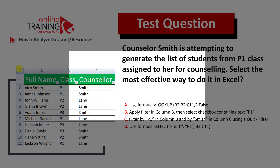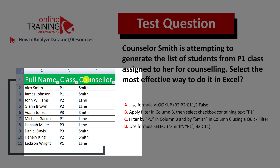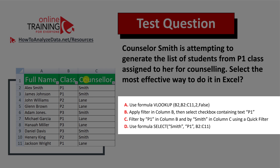You're presented with the snippet of data on the left. The data contains full names of the students, class ID in column B, and then the counselor's last name in column C. There are four different choices to choose from.